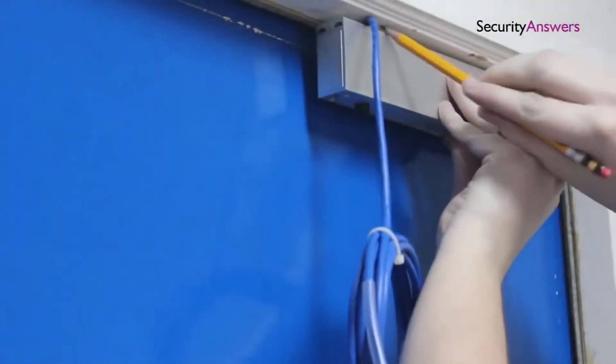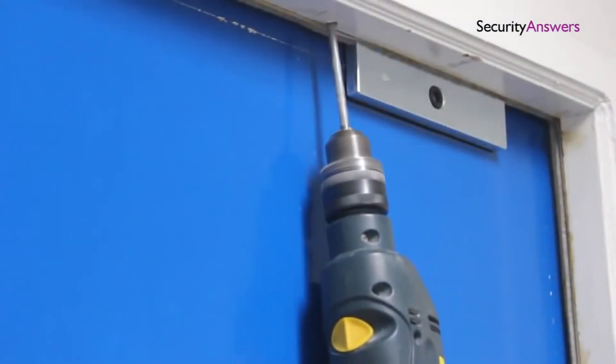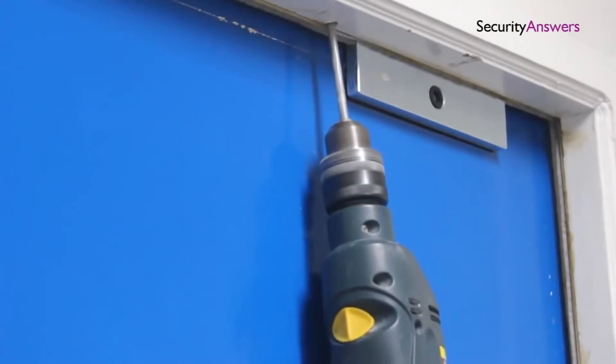As this lock has wiring attached, we also need to account for this by drilling the appropriate holes for the wire to pass through. Once this has been done, go ahead and drill your holes.